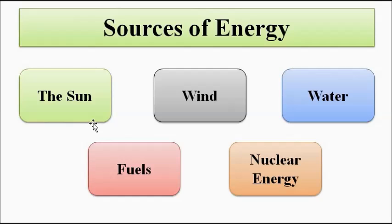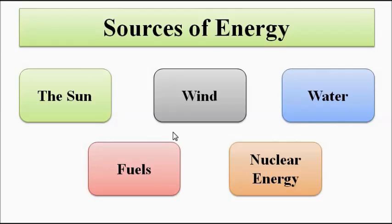Out of these, water, fuels, and nuclear energy form the bulk and satisfy the majority of the power requirements of the current population. Sun and wind are still in the experimental stage, but the majority of the contribution in the power generation sector is from fuels, water, and nuclear energy. This video covers the basic characteristic features associated with each of these sources.